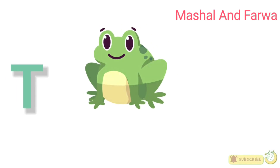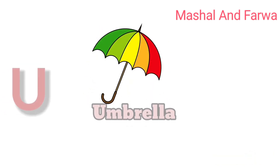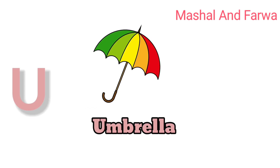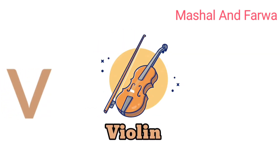G is for toad, t-t-t-toad. U is for umbrella, u-u-u-umbrella. E is for violin, v-v-v-violin.